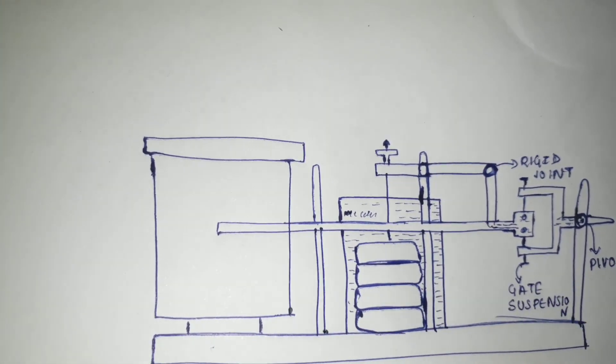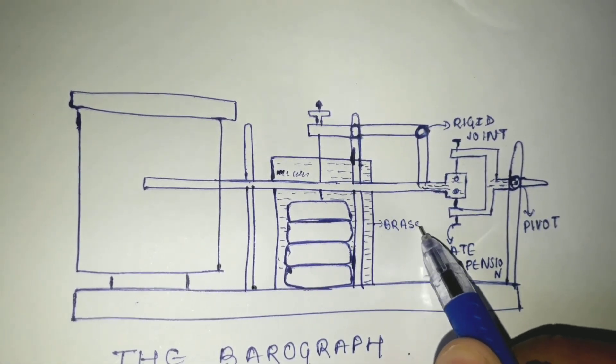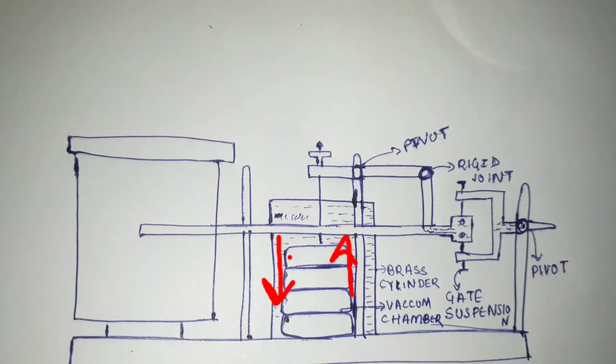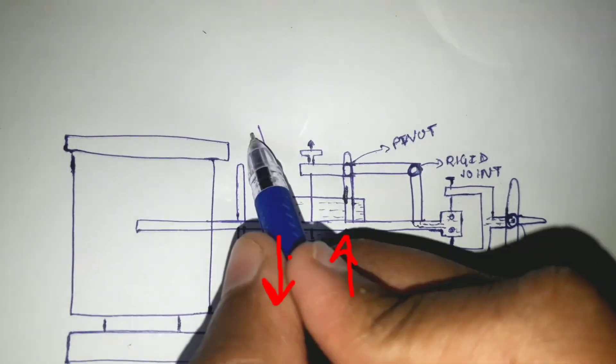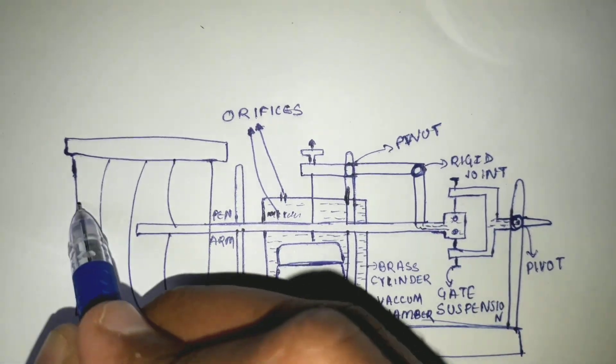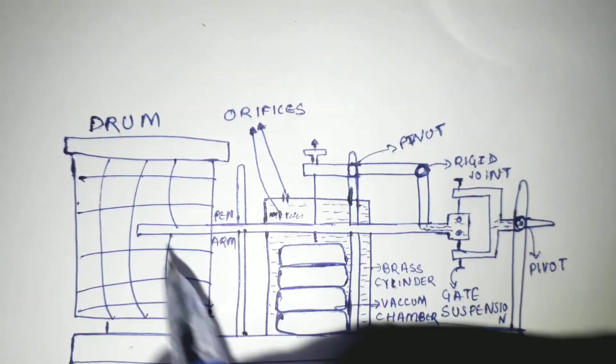So what is the purpose of this vacuum chamber? Whenever the atmospheric change occurs, this causes the top of the chamber to ascend or descend, and this movement is conveyed by a lever system to the stylus that moves up or down on the chart.